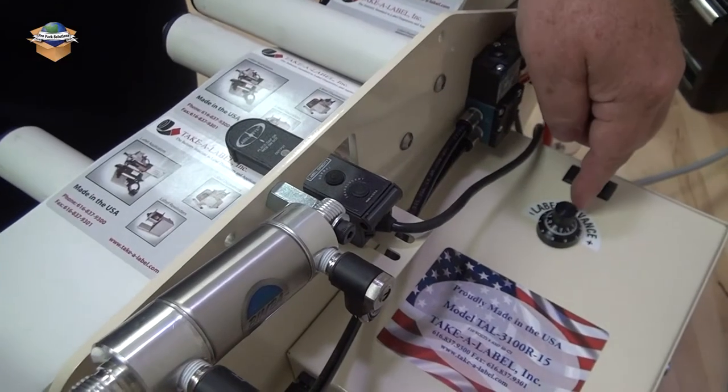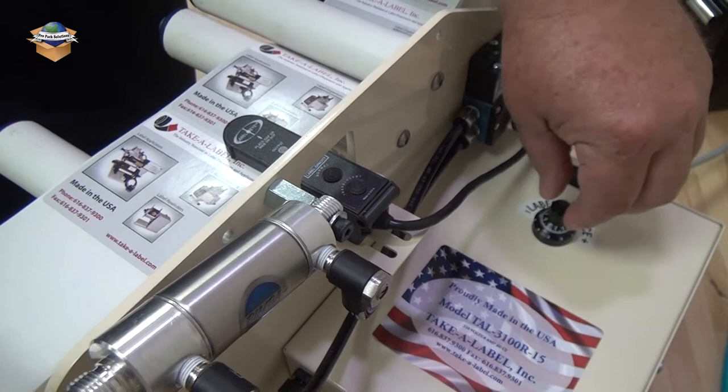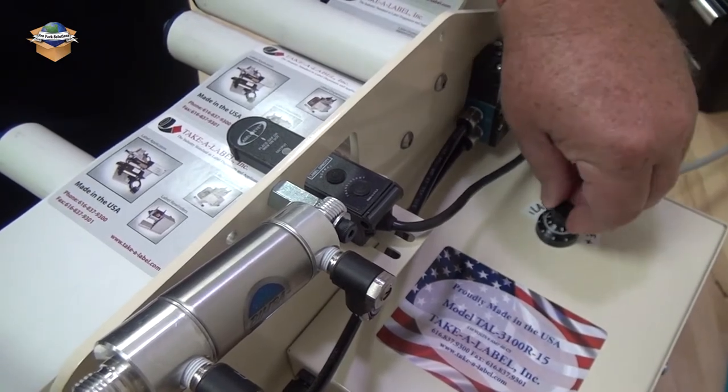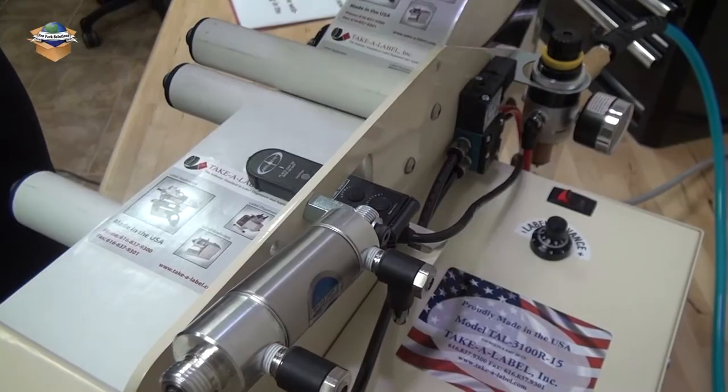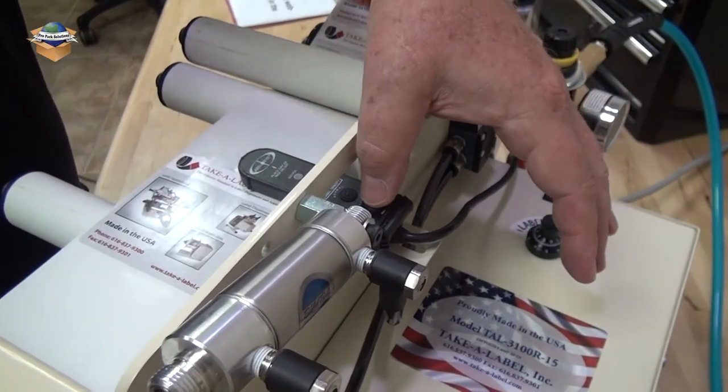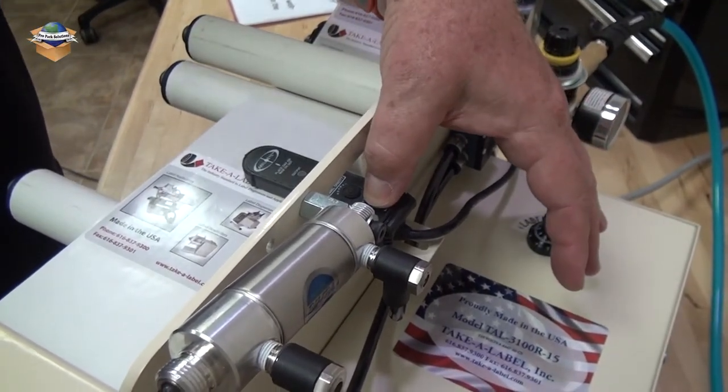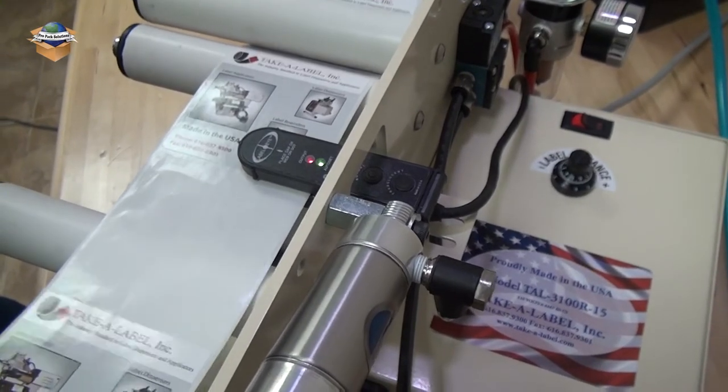First thing we're going to do is come over here on the label advance and we're going to unlock it and reset it back to zero. Then we're going to remove a label from underneath the photo eye. And then we need to press the button for three seconds until the blinking stops. Next we'll dispense labels.